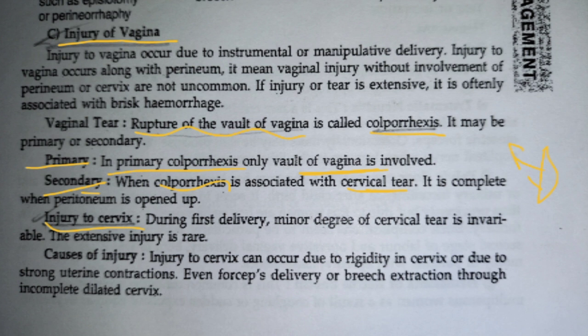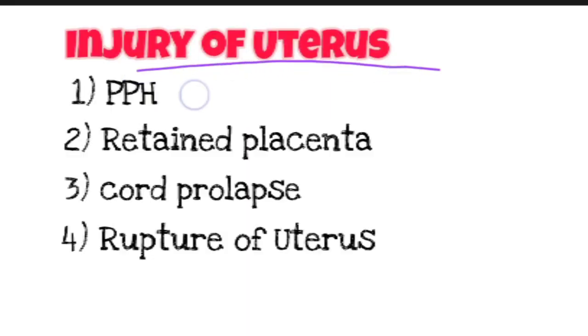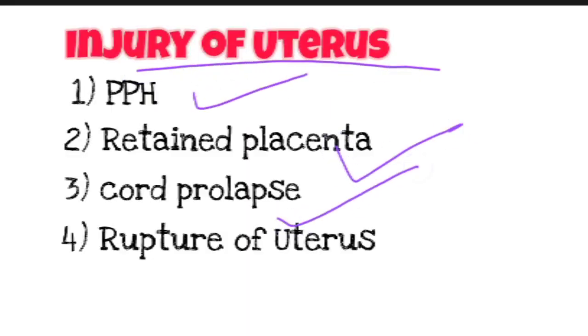Injury of the cervix is not common — it is very rare. It can be seen in conditions like forceps delivery, breech delivery, or severe uterine contractions. Cervical injury involves cervical laceration and hemorrhage. Injury of the uterus involves PPH, retained placenta, cord prolapse, and rupture of the uterus, which will be covered in further sections.